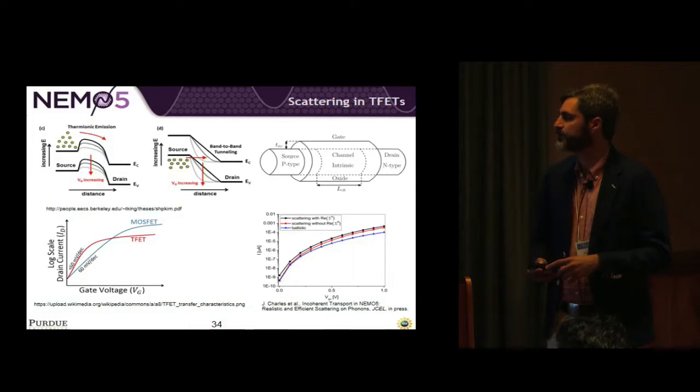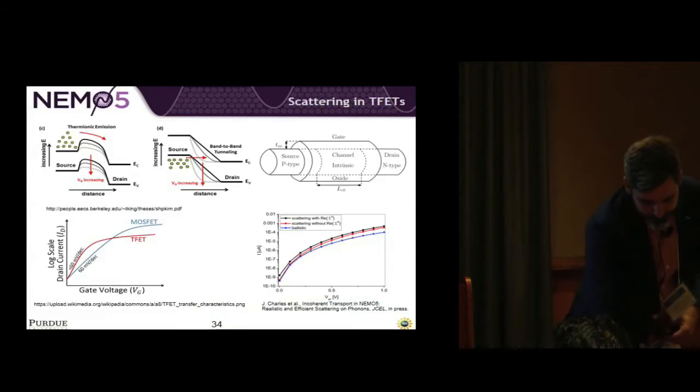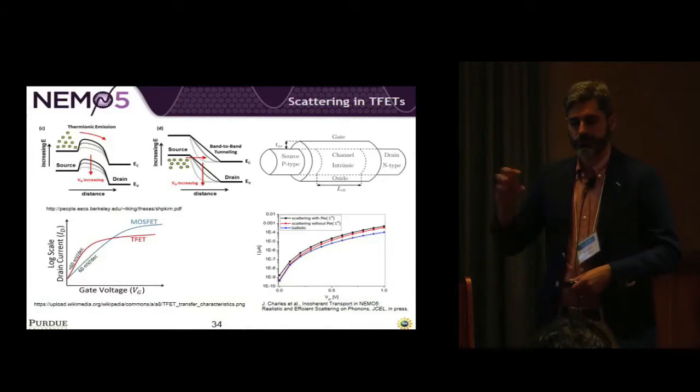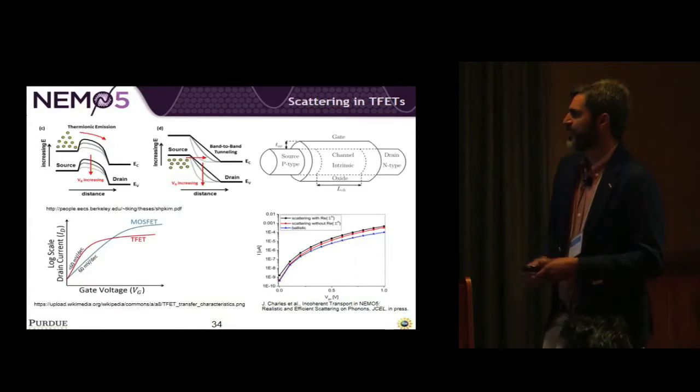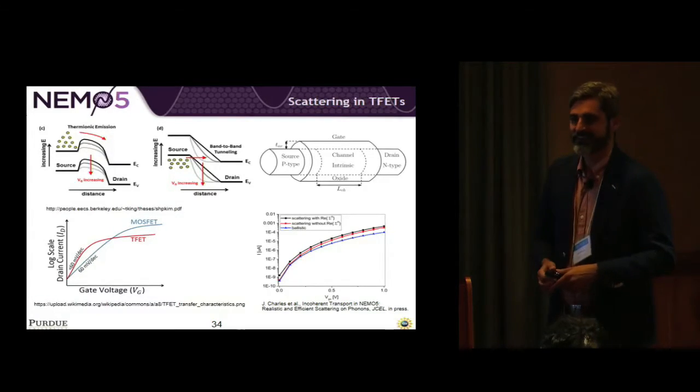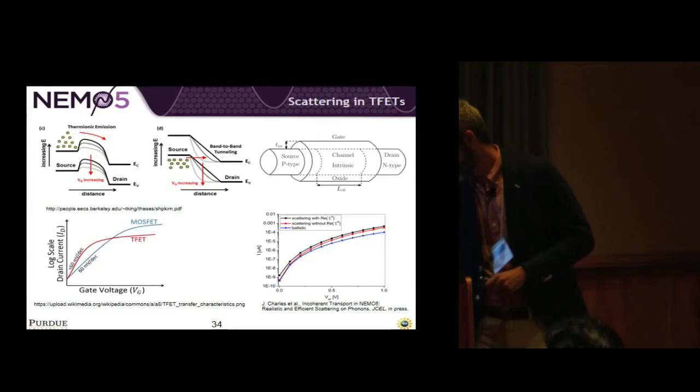And so James's work is looking at how these devices operate when you have electron-electron phonon scattering. And I find, I don't fully understand this, but I thought it was really interesting that when you add scattering, you actually get a higher current than if it's just ballistic, which is supported by experimental data. So I'm not just saying that, like, oh, we have this result we can't resolve. I just found it interesting. Oh, sorry. I'm right on time.